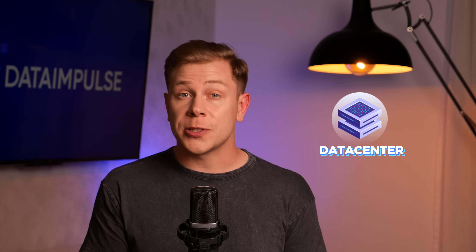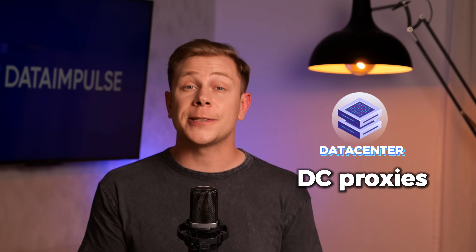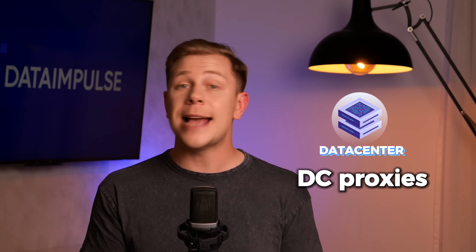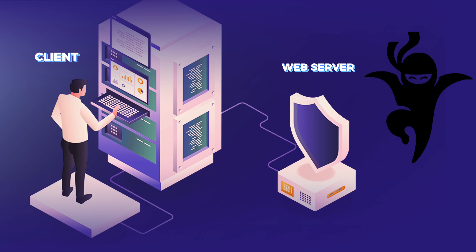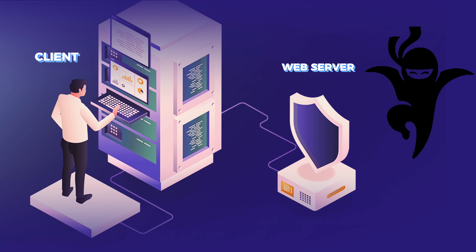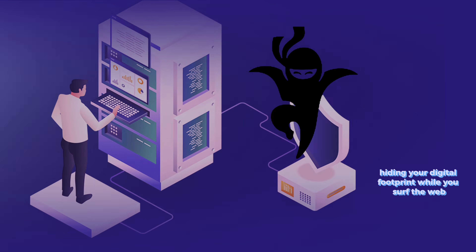Let's start with data center proxies. Also known as DC proxies, they use IP addresses from data center servers and third-party cloud service providers. They connect clients and web servers, acting like ninjas of the internet, hiding your digital footprint while you surf the web.